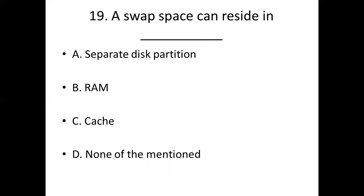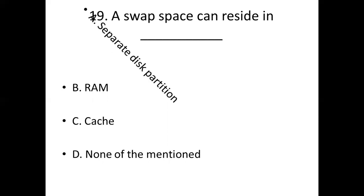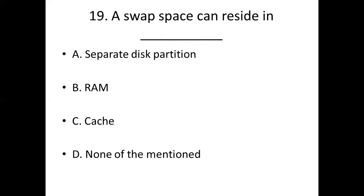Nineteenth bit: A swap space can reside in dash. Option A: Separated disk partition. Option B: RAM. Option C: Cache. Option D: None of them mentioned. Answer: Option A — Separated disk partition.